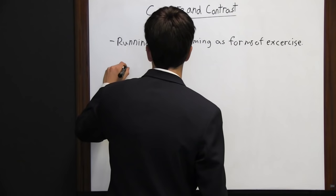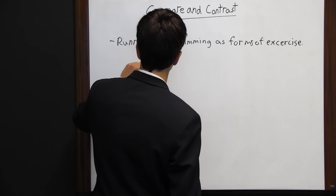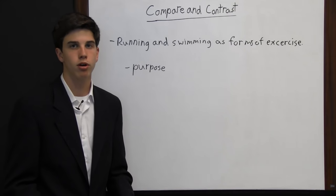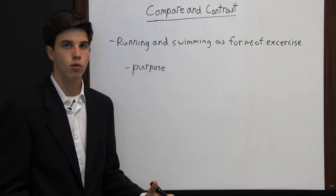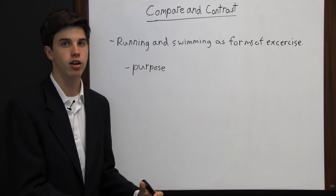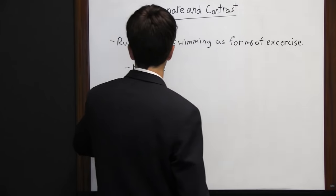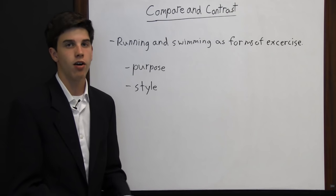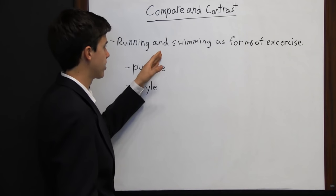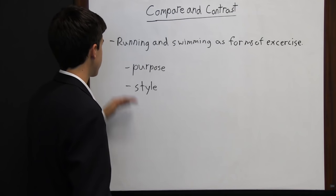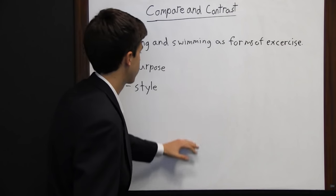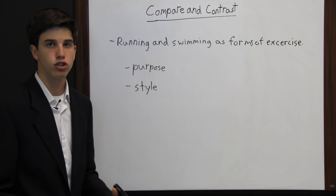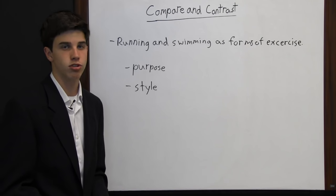There are a few things to remember when writing one of these essays. First, have purpose — don't just compare and contrast something just to do it. Have some kind of purpose so your reader can determine which is the best form or the best choice. Then pick your style: you can go back and forth discussing how running and swimming are alike and different throughout the essay, or you can talk about running entirely and then swimming. Decide which is most effective.